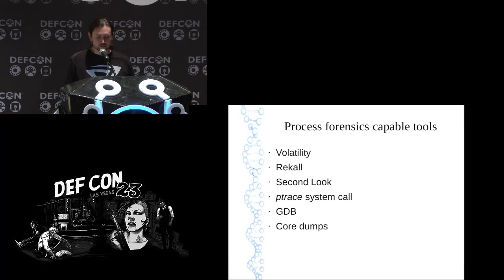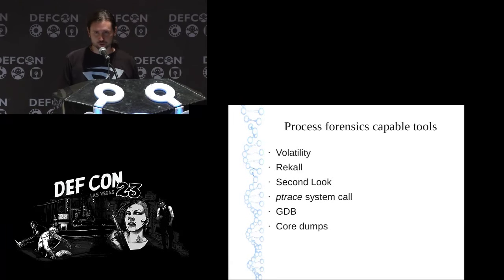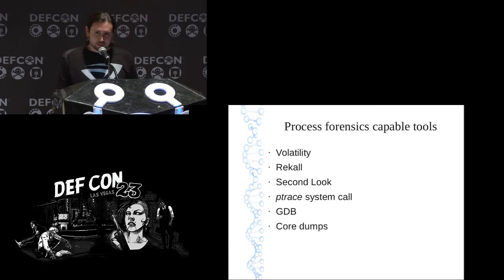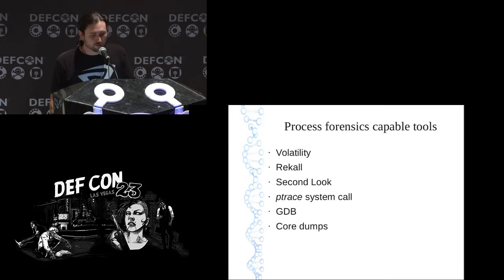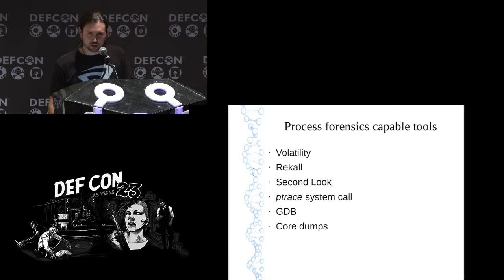There are a lot of forensics tools available that also do some process analysis. The three major ones are Volatility, Recall, and Second Look, which is commercial. These primarily do full system memory dumps, and they get nice structural access to the kernel through DWARF debugging symbols. But you don't have DWARF debugging symbols for every single process, so these tools tend to lose resolution the closer they get to the process level. ECFS isn't meant to replace these tools — it's hopefully supplementary. Then of course you have ptrace, GDB, and regular core dumps.